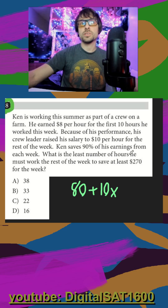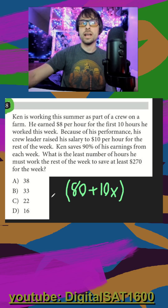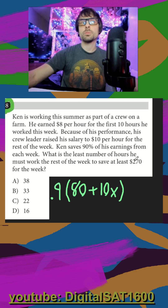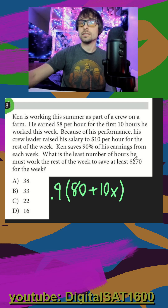He saves 90% of his earnings from each week, so this is his total earnings, and 90% of that, which would be times 0.9. What is the least number of hours he must work the rest of the week — this unknown x — to save at least $270?